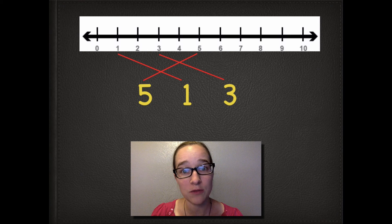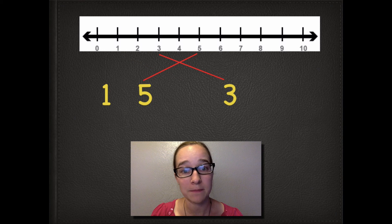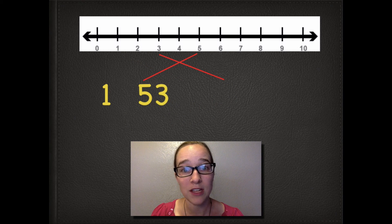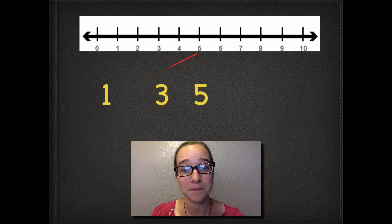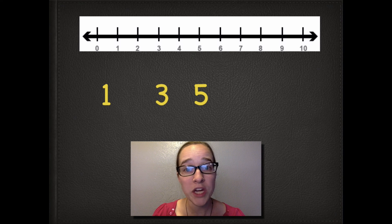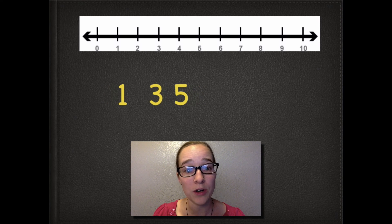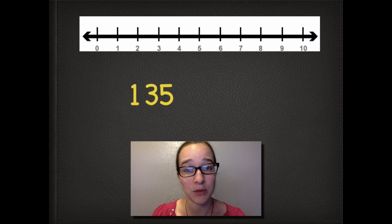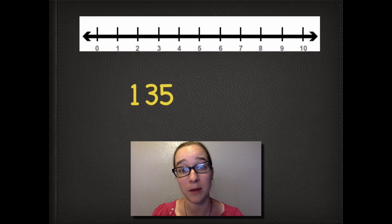Now we're going to move our numbers so that they're in line with their numbers on the number line. Let's do number 1 first since it's first on our number line, then we'll get rid of that red line. Now we'll do number 3, move that directly underneath the number 3 on the number line, and number 5. Now since our numbers are in line with the number line, we know they're in order from smallest to biggest: number 1 is smallest, number 3 is bigger, and number 5 is the biggest of the three.